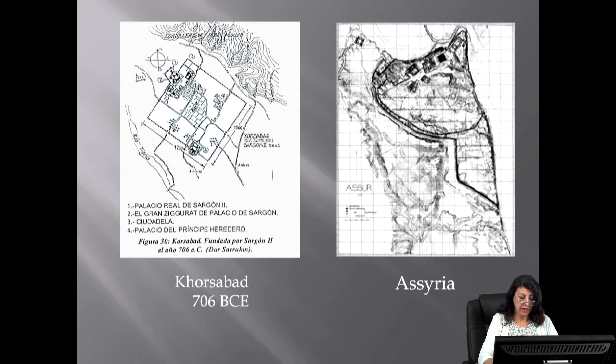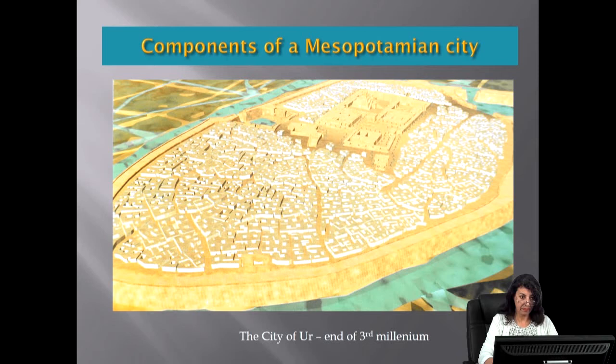Here we can see two cities from Upper Mesopotamia: Assyria, a gradually developed city with its irregular shape, and Khorsabad of Sargon II with its square walls and formal cluster of palaces in the north.